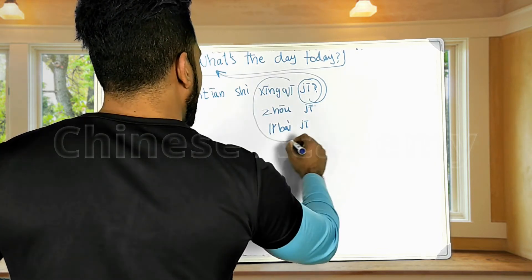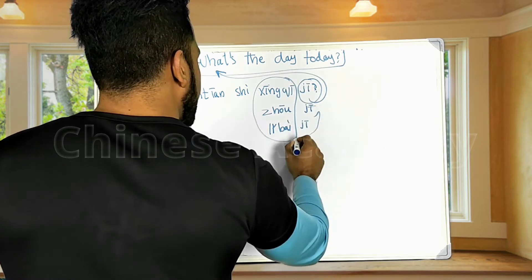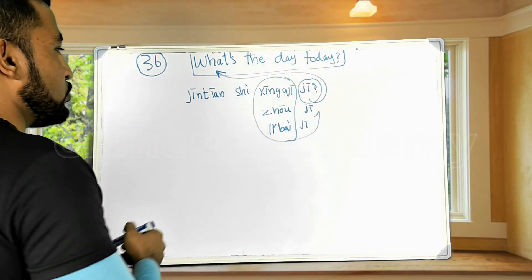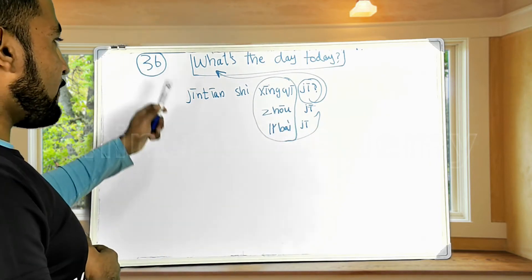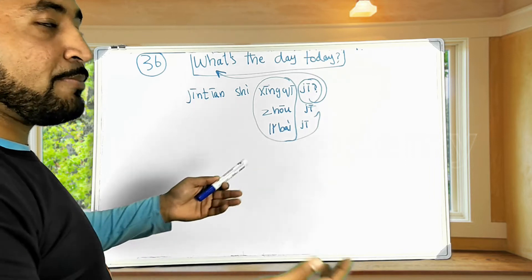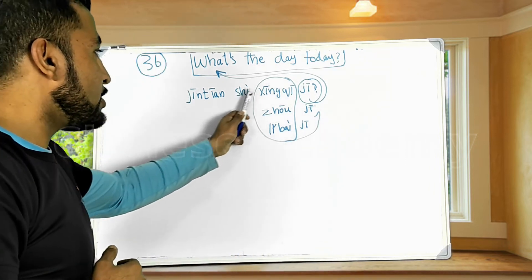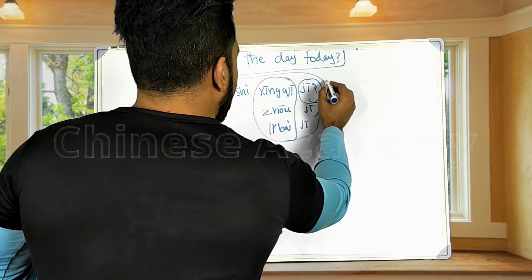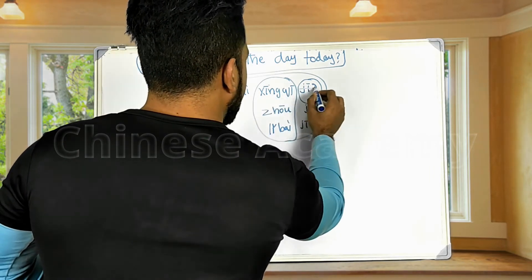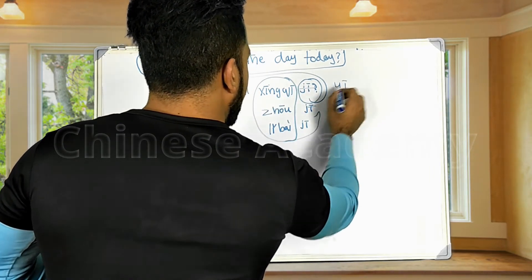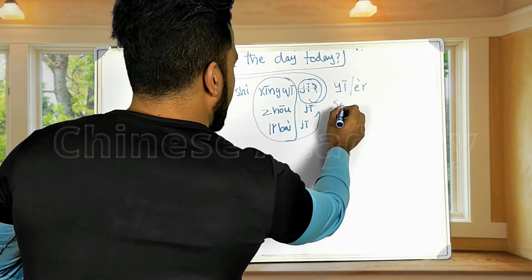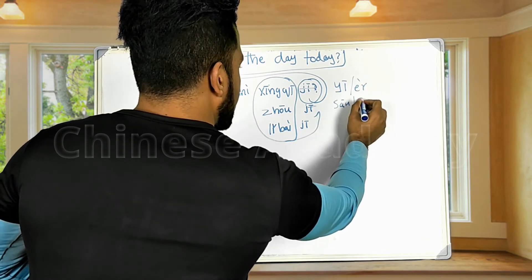Remember, these three forms — 星期 (xīngqī), 礼拜 (lǐbài), and 周 (zhōu) — are all words used for weekdays. 星期 means week. Someone has asked the question 礼拜几 — what's the day today? If today is Monday, you can simply answer 礼拜一. For Tuesday, you answer 礼拜二.